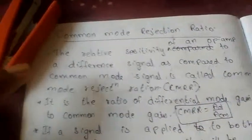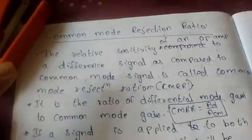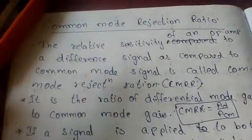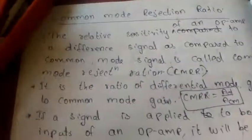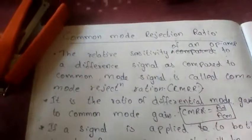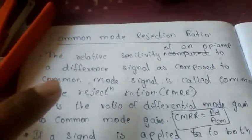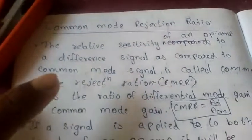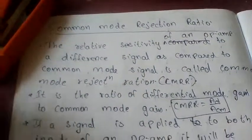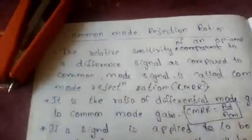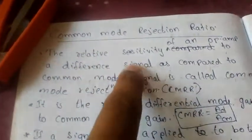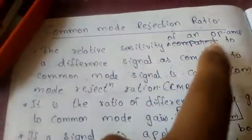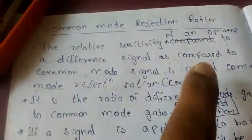Hi guys, now we are going to study how to measure the common mode rejection ratio. The relative sensitivity of an op-amp to a differential signal as compared to a common mode signal is called common mode rejection ratio. That is, it is the relative sensitivity of an op-amp to a differential signal as compared to a common mode signal.